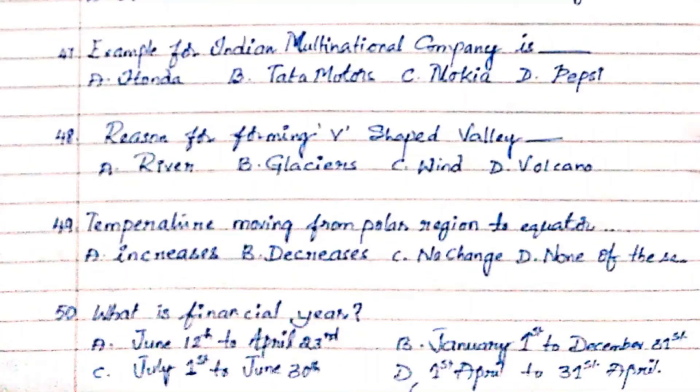Question 47: Example of an Indian multinational company is. Option A. Honda, Option B. Tata Motors, Option C. Nokia, Option D. Pepsi. The answer is Option B. Tata Motors.